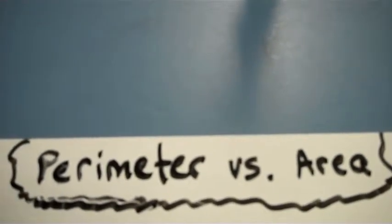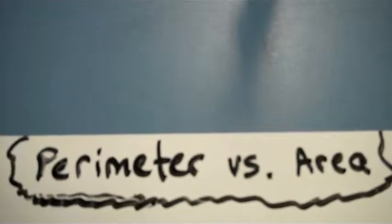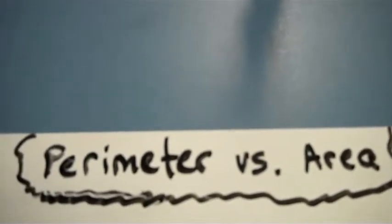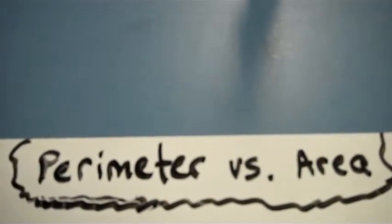When looking at figures or shapes in geometry, it's very important to know how to find the perimeter of that shape, as well as the area. But they're also very different, so let's take a look at them.